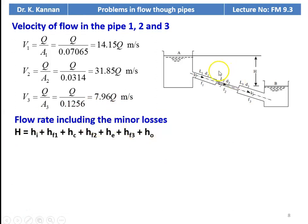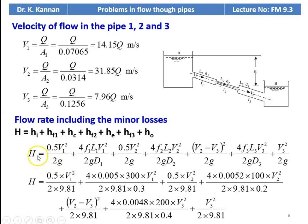For flow rate including minor losses in the compound pipe, the total head loss H = Hi + Hf1 + Hc + Hf2 + He + Hf3 + Ho. Hi is the inlet loss, Hf1 is friction in pipe 1, Hc is contraction loss, Hf2 is friction in pipe 2, He is enlargement loss, Hf3 is friction in pipe 3, and Ho is the outlet/exit loss. The equations: Hi = 0.5V1²/2g, Hf1 = 4F1L1V1²/2gD1, Hc = 0.5V2²/2g, Hf2 = 4F2L2V2²/2gD2, He = (V2-V3)²/2g, Hf3 = 4F3L3V3²/2gD3, Ho = V3²/2g.